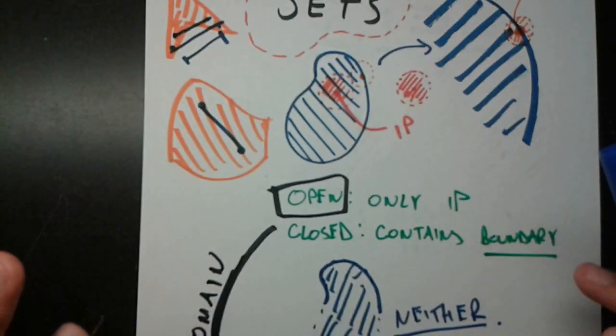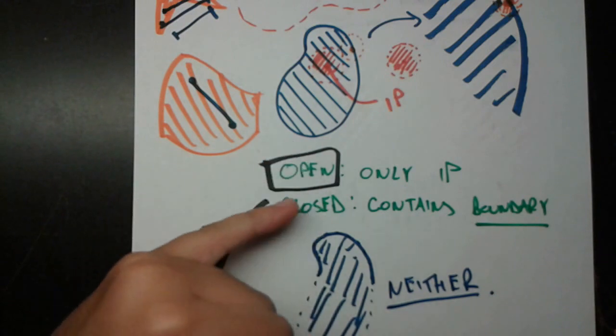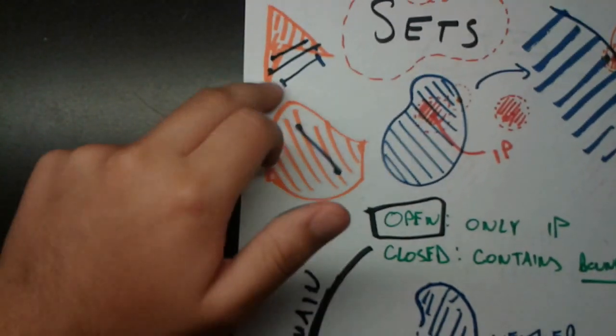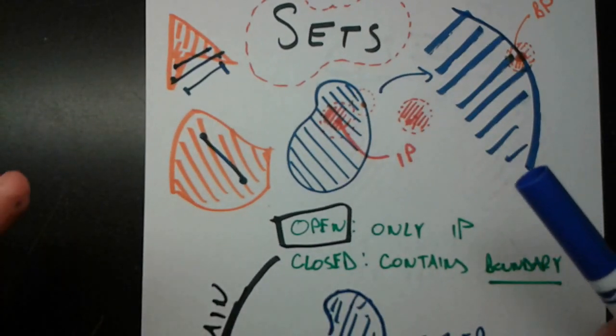So we just went through some basic definitions. Open, closed, interior points, boundary points, connected, domain, and convex. So keep those all in mind. Until next time.